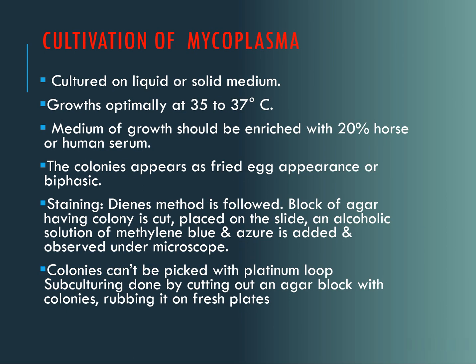For cultivation of mycoplasma, they can be cultivated on either liquid or solid medium, with optimum temperature between 35 to 37 degrees Celsius. They require an enriched medium, enriched with 20% horse or human serum. The colonies have a unique appearance called the fried egg appearance or biphasic appearance — the center is opaque and the edges are translucent, like that of a fried egg.